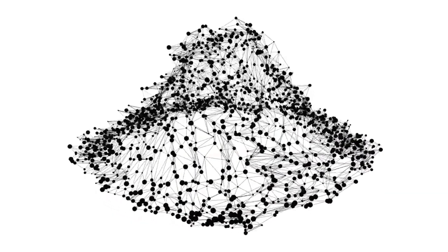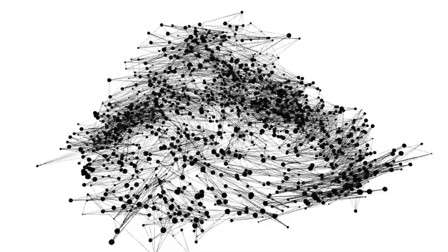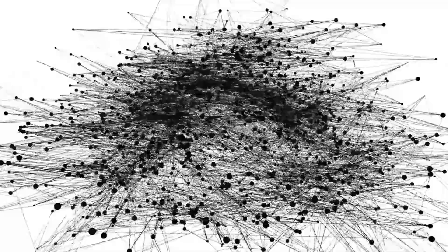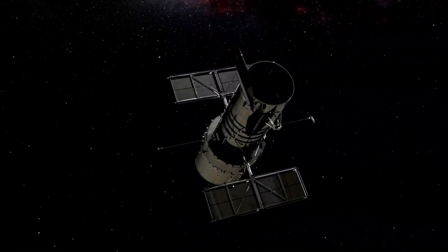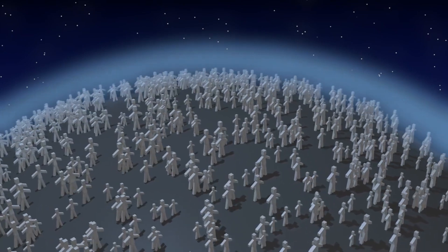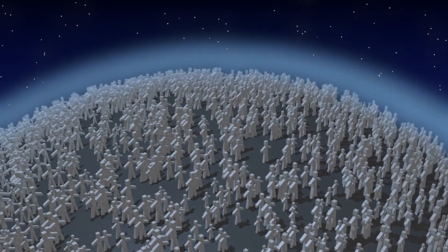These discoveries compel us to broaden our perspective on what makes a celestial body habitable. If Pluto, once branded a desolate, frozen world, can maintain a liquid ocean beneath its icy facade and host the chemical precursors to life, then the criteria for habitability must be re-examined. Could there be life, even if only in microbial form, thriving in an environment so alien and extreme?